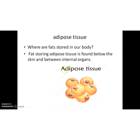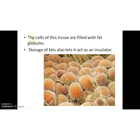The last example is adipose tissue. Fats are stored in adipose tissue. This fat-storing adipose tissue is found below the skin and between internal organs. The cells of this tissue are filled with fat globules. Storage of fat also lets it act as an insulator.